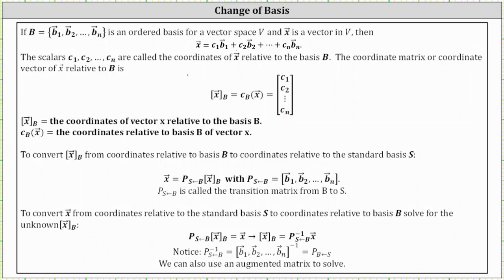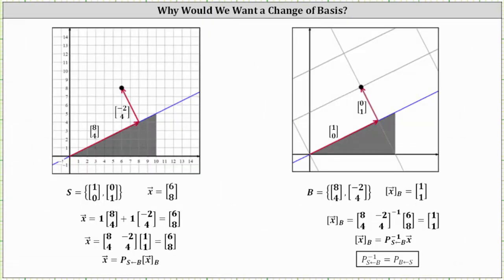Let's take a look at an example. Let's assume the gray triangle is a ramp. First we have the coordinate system relative to the standard basis vectors, which are the vectors (1, 0) and (0, 1). If one vector is along the ramp and the other is orthogonal to the ramp, we can use these two vectors: the vector along the ramp has coordinates (8, 4) relative to the standard basis vectors, and the second vector is (negative 2, 4). The sum of these two vectors would be the vector from the origin to the black point, with coordinates (6, 8).